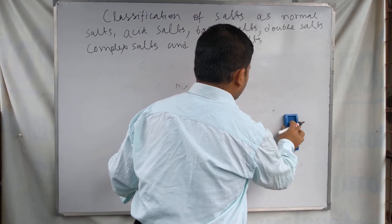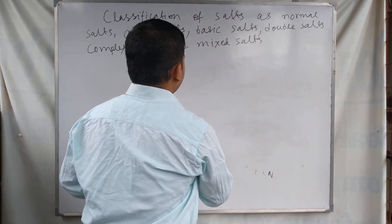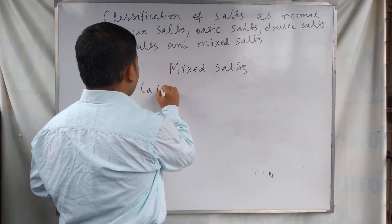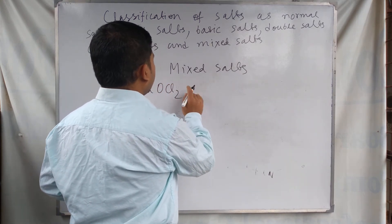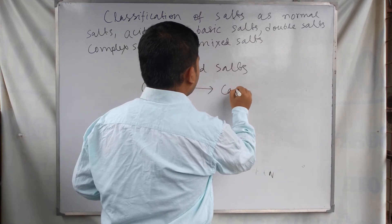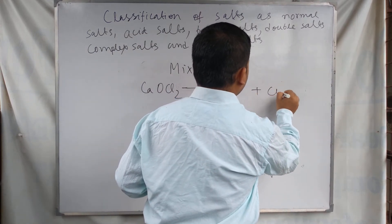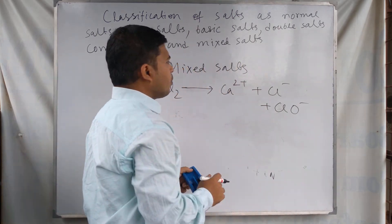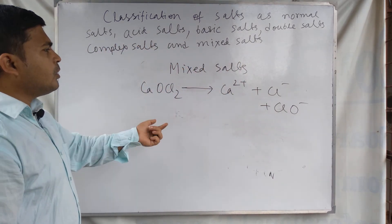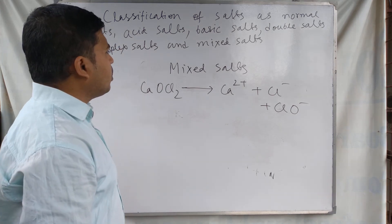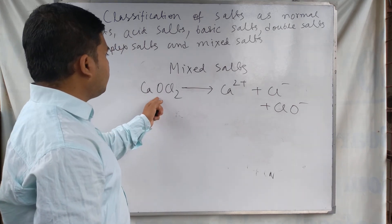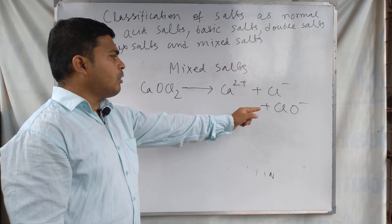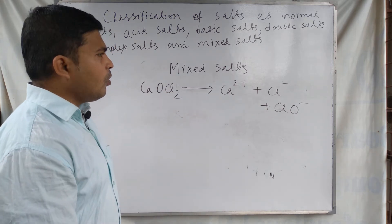The next type of salts is mixed salts. For example, CaOCl2 (bleaching powder) — when it is ionized, it produces Ca²⁺, Cl⁻, and ClO⁻. If more than one type of anion is formed on ionizing the salt, these are called mixed salts. CaOCl2 is an example of a mixed salt because when it ionizes it produces both chloride ion Cl⁻ and hypochlorite ion ClO⁻.